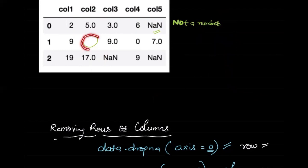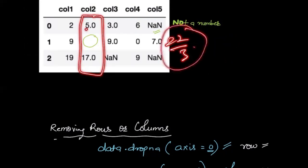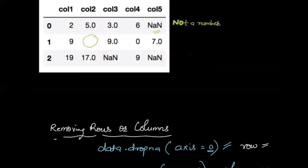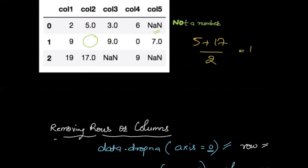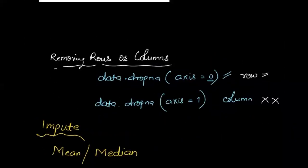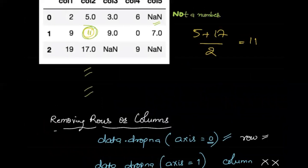Instead, what if you add the mean? The mean of the existing values — for example, 5 plus 17 divided by 2 equals 11 — so you impute 11 in place of the missing value. This is an easy and fast way of doing that, and it's fine if you have a small number of missing values in your data.